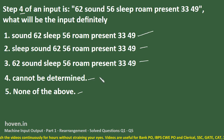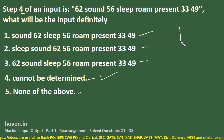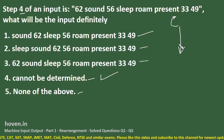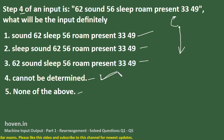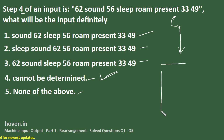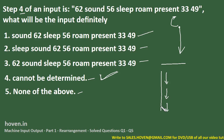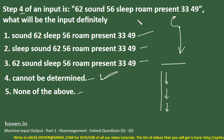The simple answer is: it cannot be determined. If you know step 4, you can definitely find the remaining forward steps. But you will not be in a position to determine the previous step, because there are so many permutations and combinations possible. It is not possible to go backwards, but it is always possible to go forward. So our answer is: cannot be determined.